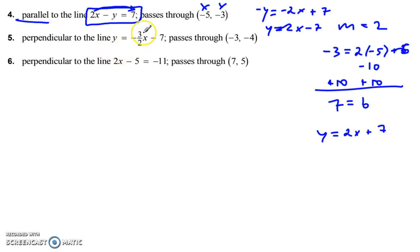Number 5, perpendicular. Here's the slope. So m for number 5. m is equal to... Perpendicular m is flip and negate. Opposite reciprocals. Flip and negate.